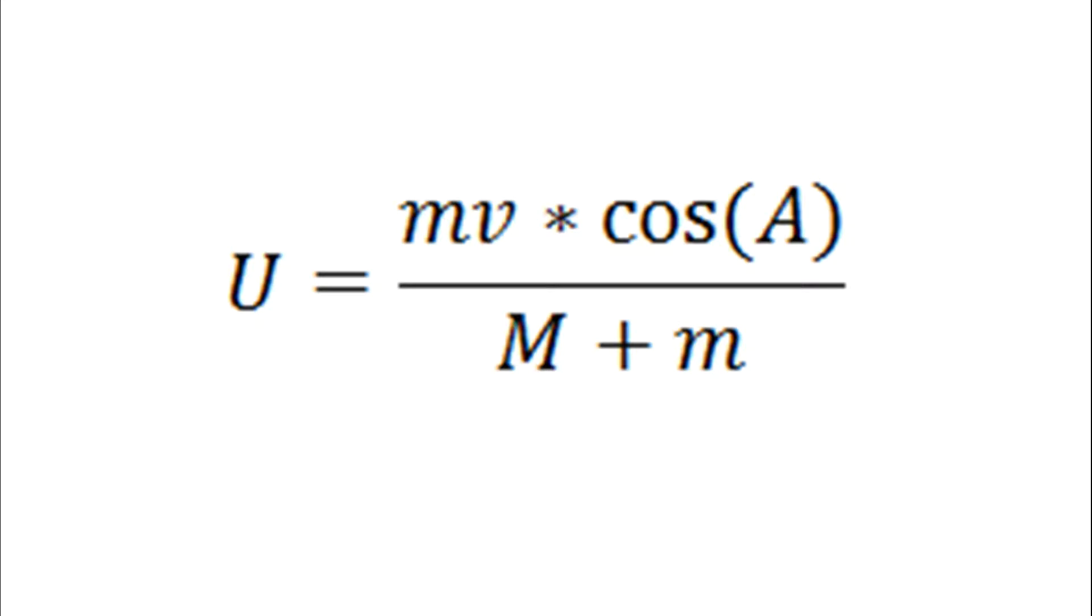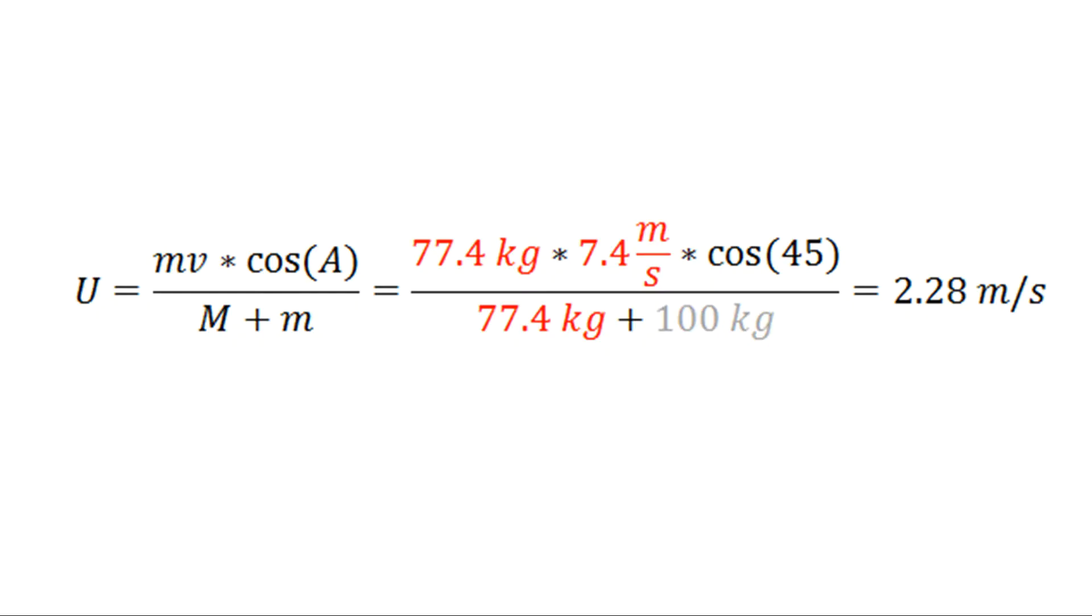To determine the velocity towards the sideline of such a tackle, we can use the equation Andrew's mass times Andrew's velocity times cosine a divided by Taylor's mass plus Andrew's mass. The angle a is the angle Andrew makes with the sideline. If a is equal to 45 degrees, this means that the velocity of the tackle towards the sideline is 2.28 meters per second.